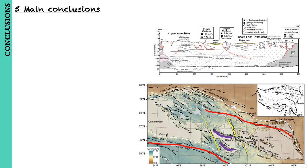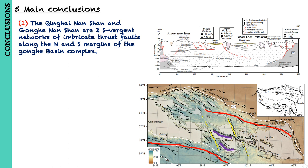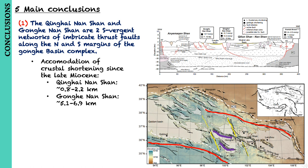Finally, let's talk about the main conclusions of this paper, grouped into five main points. First, they present structural, geomorphic, and thermochronologic markers to analyze the two south-vergent networks of imbricate thrust faults along the margins of the Gonghe Basin Complex. Since the late Miocene, the Qinghai-Nanshan has accommodated 0.8 to 2.2 km of upper crustal shortening and the Gonghe-Nanshan has accommodated 5.1 to 6.9 km.